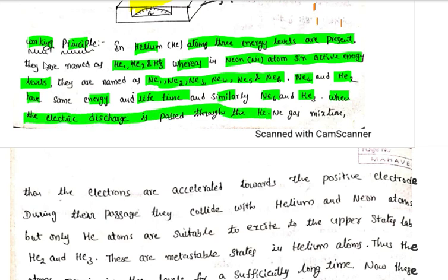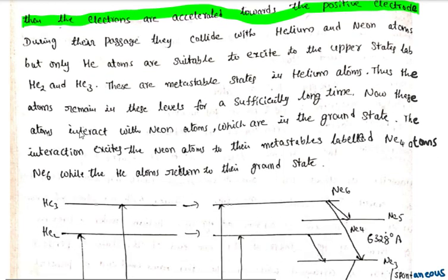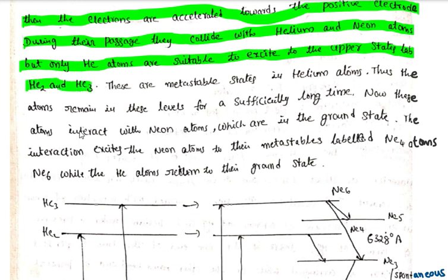When the electric discharge from the radio frequency oscillator is passed through the helium-neon gas mixture, electrons are accelerated towards the positive electrode. During this process, the electrons collide with helium and neon atoms. Only helium atoms are suitable to get excited to the upper states labeled as helium-2 and helium-3.